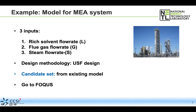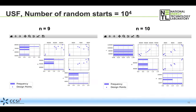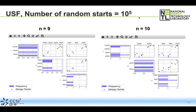We're going to look at what those designs look like after letting FOCUS run—I asked for a design of size nine and one of size ten. In both cases, we're spanning the space of interest with points that cover the irregular design region nicely. Using random starts of 10^4 and 10^5, our designs look pretty comparable, and in particular we have a nice spread throughout the space.